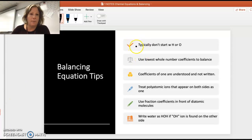Balancing equations - some are very easy and some are a little tougher. You typically don't want to start with hydrogen or oxygen or anything else present in more than one compound. We do need the lowest whole number coefficients. You don't have to write the coefficient one. Polyatomic ions, when you're balancing, as long as you see it on both sides keep it together as one. You can use fractions in front of diatomic molecules and water - sometimes it's helpful to write water as HOH.